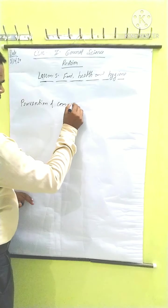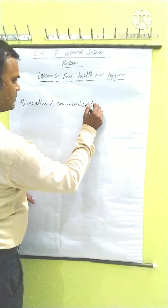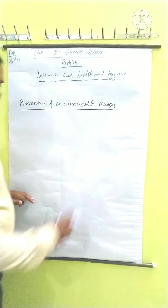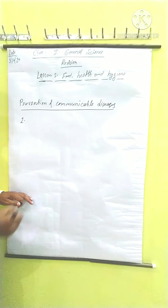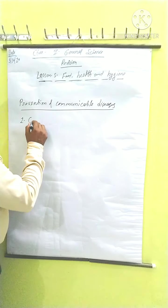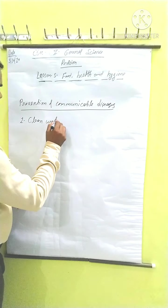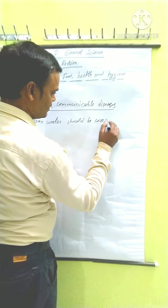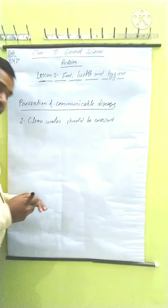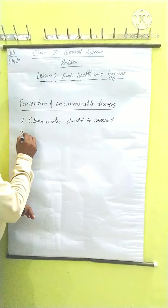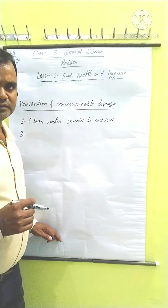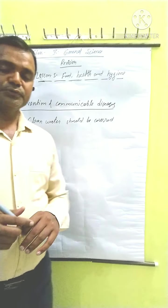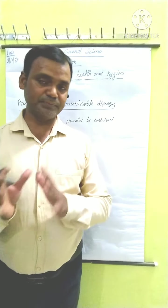Next topic is prevention of communicable diseases. How to prevent communicable diseases? First, clean water. Clean water should be covered and stored properly. Always use clean water for drinking.